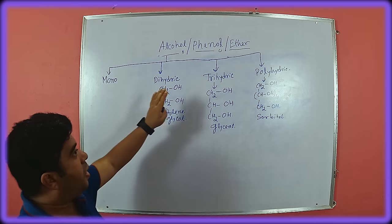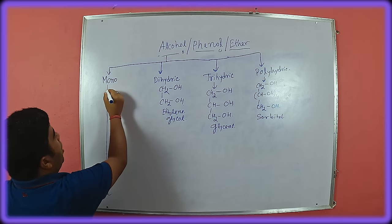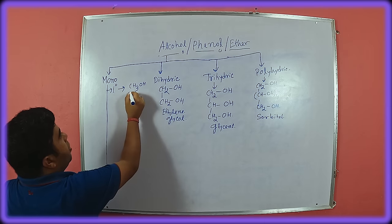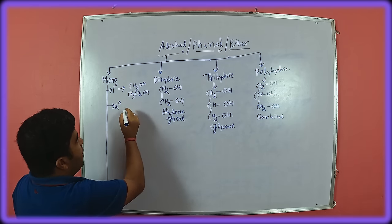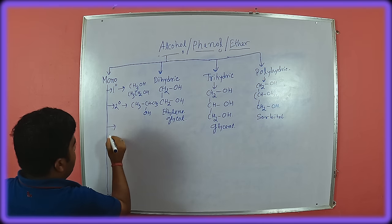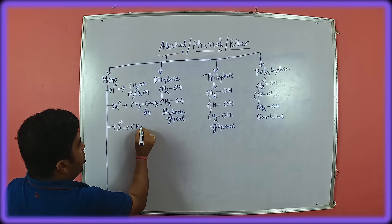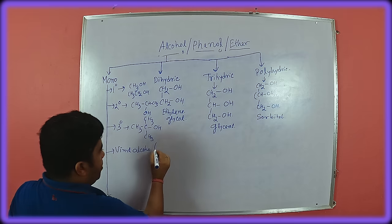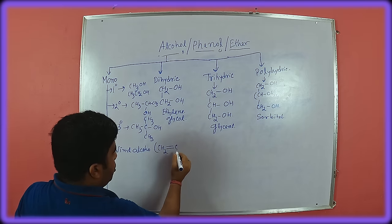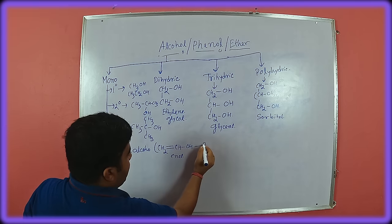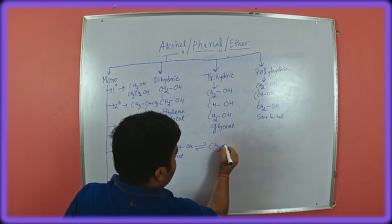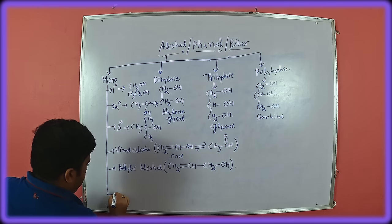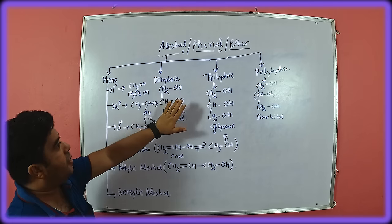Monohydric alcohols are classified in various subclasses: 1° (primary) alcohol — for example methanol, ethanol; 2° (secondary) alcohol — for example isopropanol; then tertiary alcohol, 3° — the well known tertiary butyl alcohol. Then vinyl alcohol, which is very unstable and undergoes keto-enol tautomerism — this enol form gives the keto form, that is acetaldehyde. Then allylic alcohol and finally benzylic alcohol.